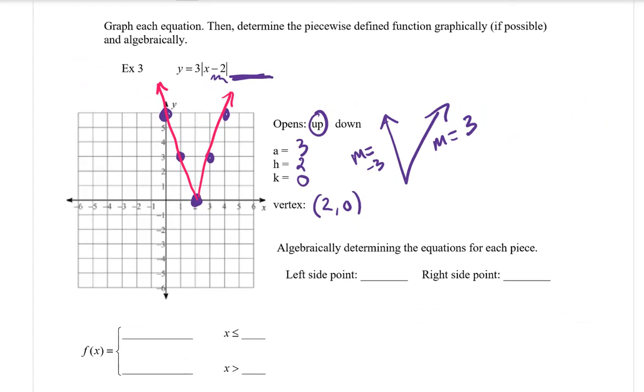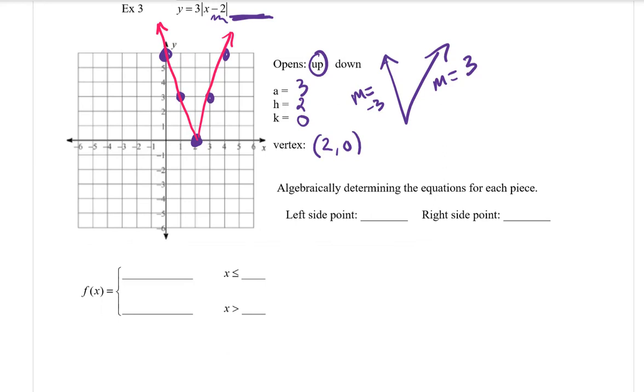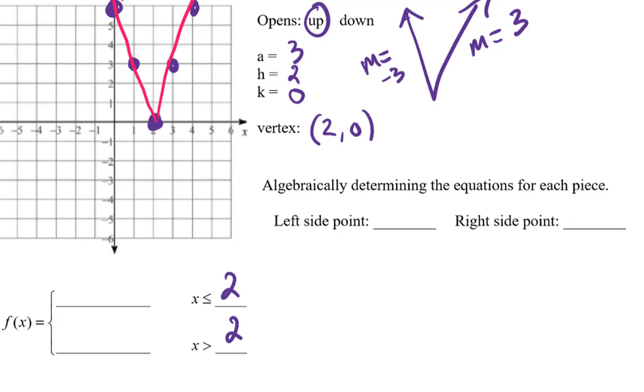All right. So those are my two slopes of each side. Now I know that my h value is two. So that's going to mean I'm going to put two right here for that part. Now let's go ahead and get after the left-hand side. Again, it doesn't matter because I can tell that on the left-hand side, I know that the slope is going to be negative three.